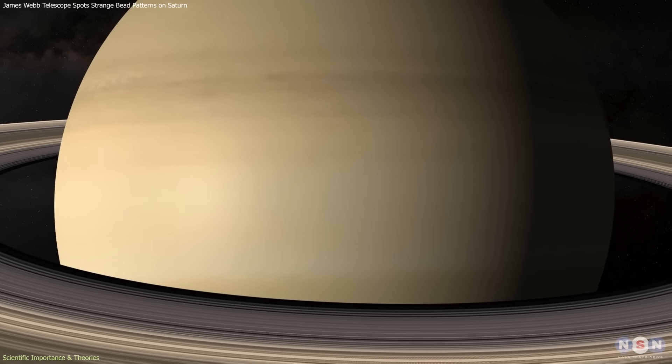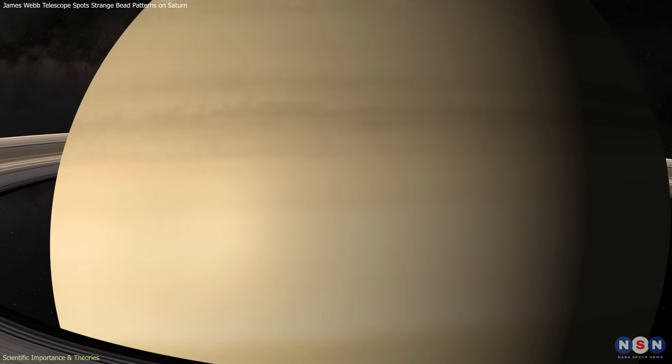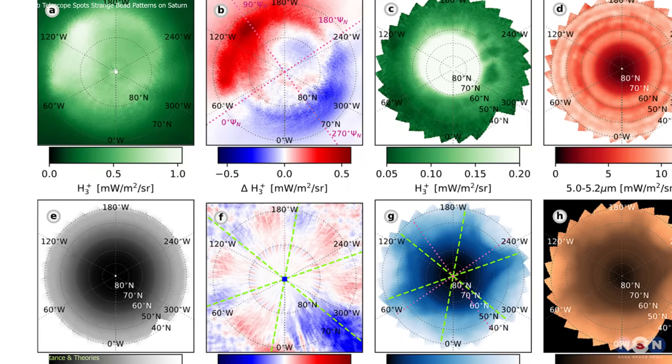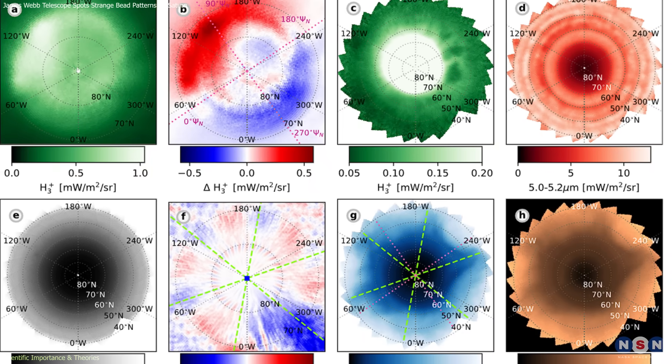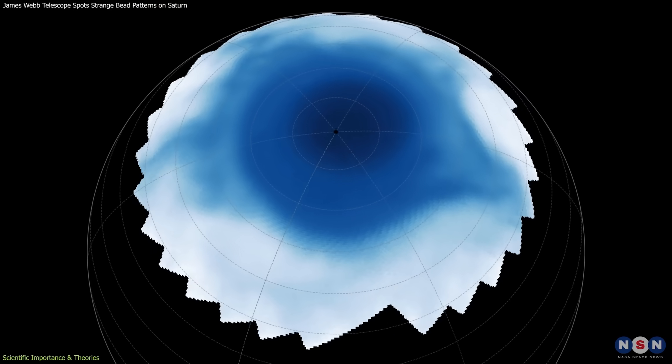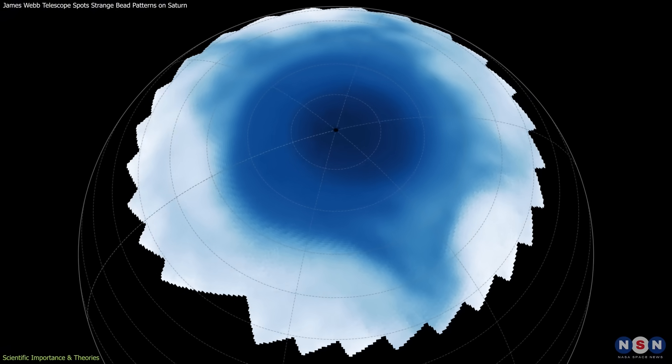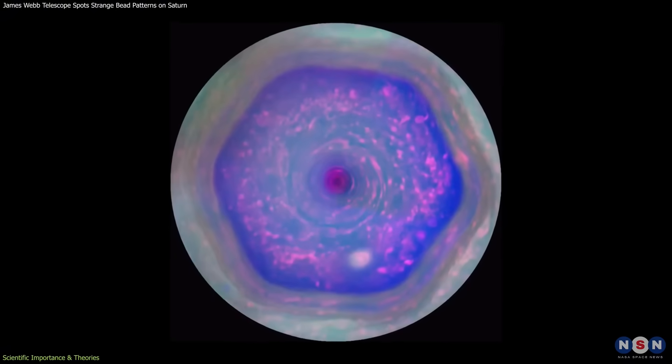Another possibility is turbulence or instabilities forming naturally as it rotates, producing structures that drift slowly around the pole. The star-shaped pattern in the stratosphere is more mysterious. It does not fit the symmetry of the hexagon,